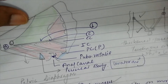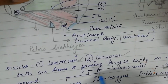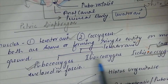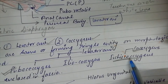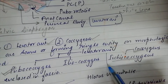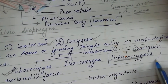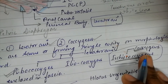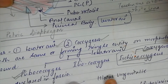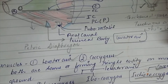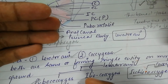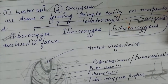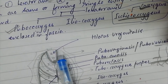Levator Ani has three morphological components: Pubococcygeus, Iliococcygeus, and Ischiococcygeus. The Ischiococcygeus part is also known as coccygeus, and it is rudimentary in human beings but more developed in lower mammals.